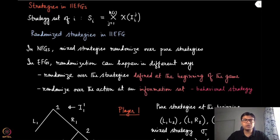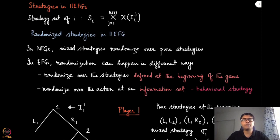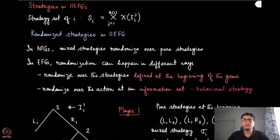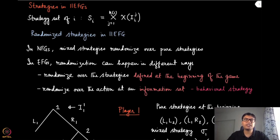So why didn't we talk about this randomization in the case of perfect information extensive form games? Because we already knew that it is possible to find a pure strategy equilibrium, which was the subgame perfect Nash equilibrium, which also happens to be the pure strategy Nash equilibrium. PIEFG is one such kind of game where the pure strategy Nash equilibrium is guaranteed to exist, and that happens to be the subgame perfect Nash equilibrium for finite PIEFGs. So we never bothered about going for randomized strategies.